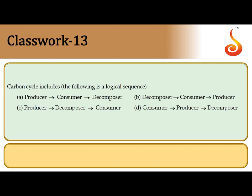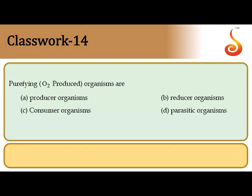The 13th question asks about the logical sequence of the carbon cycle. The first step is locking up CO₂ from the atmosphere into organic compounds, starting with a producer. Energy then moves to a consumer and then to a decomposer, which carries out respiration and releases CO₂ back to the atmosphere. Producers take in CO₂ and decomposers return it, so option A is the logical sequence of the carbon cycle.